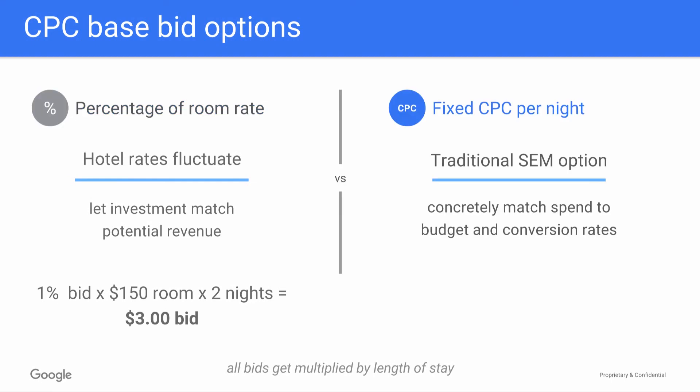Your second CPC option is bidding a fixed cost per click per night. This bid is the maximum cost you're willing to pay for a click on a property. Taking the example from before, if you bid $2 for that same property, your $2 bid gets multiplied by two nights for a total bid of $4.